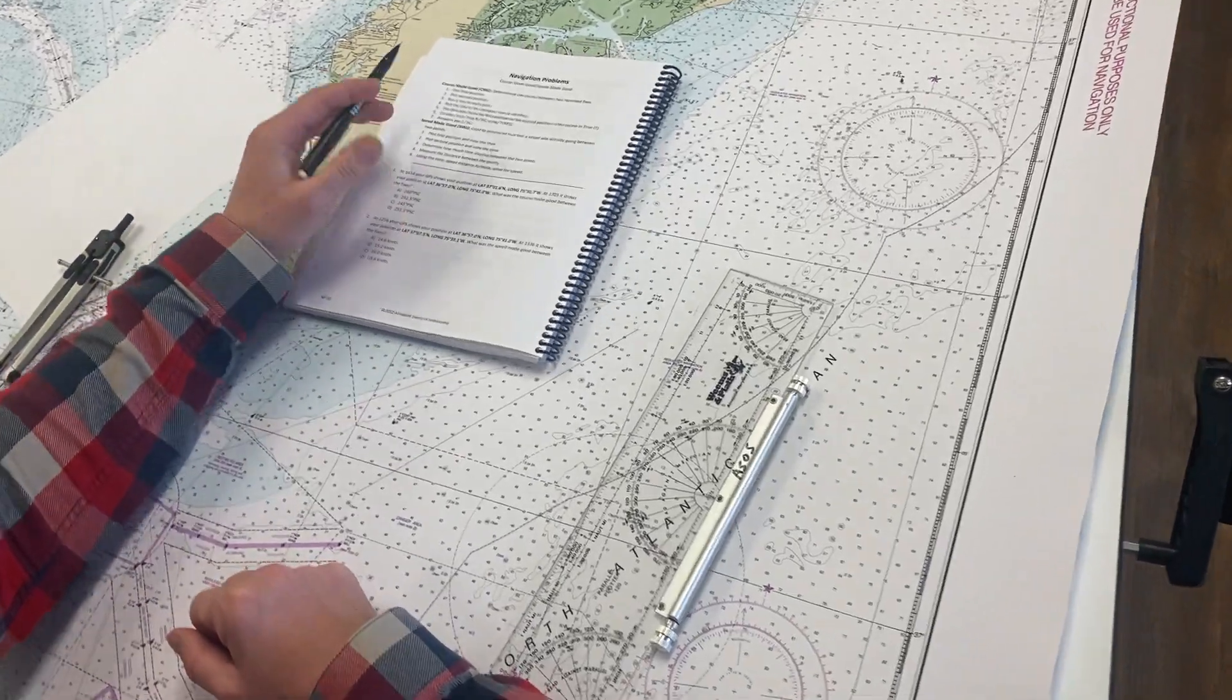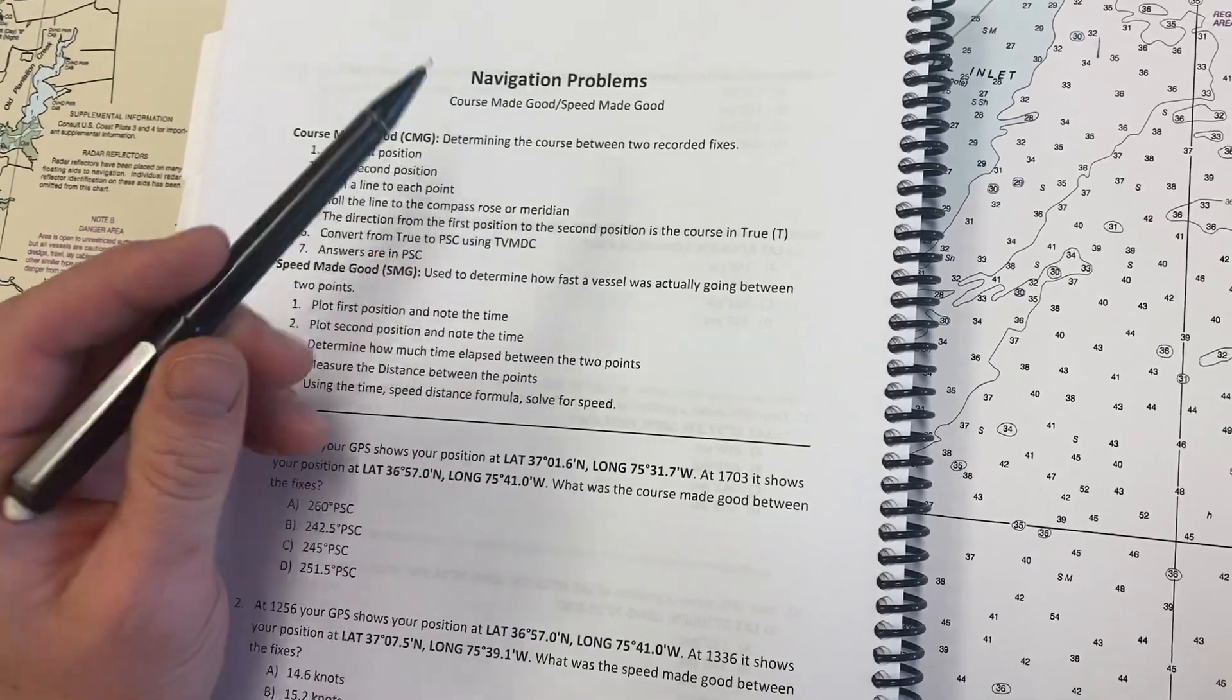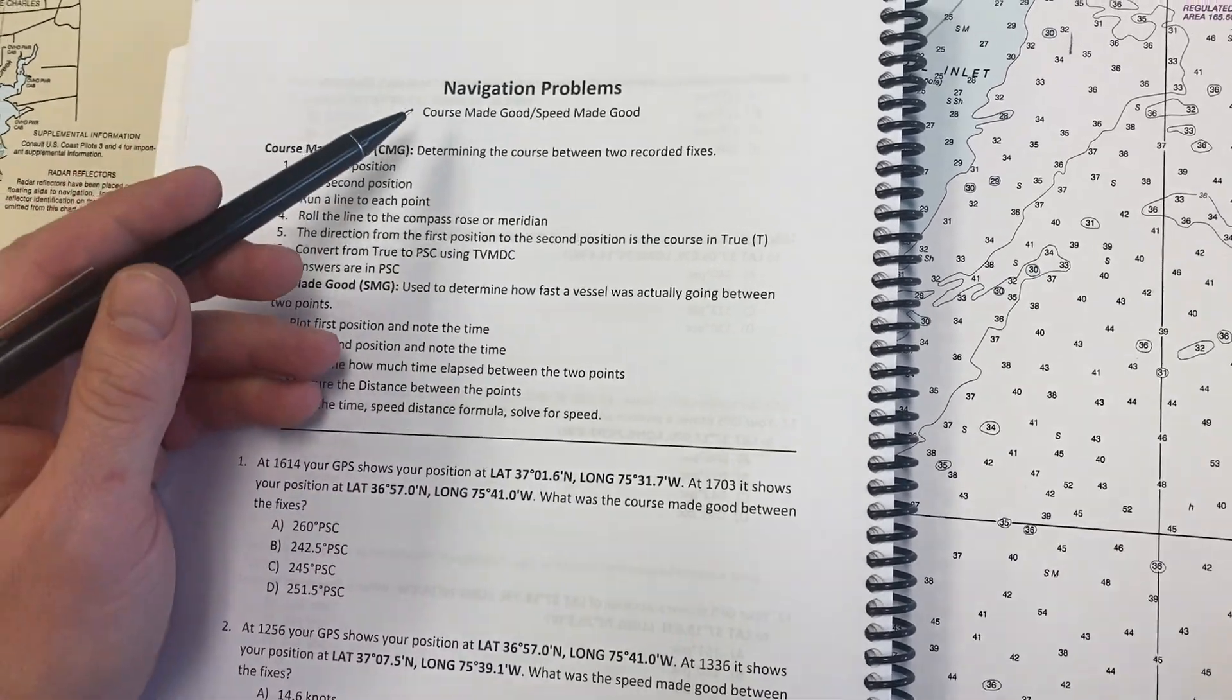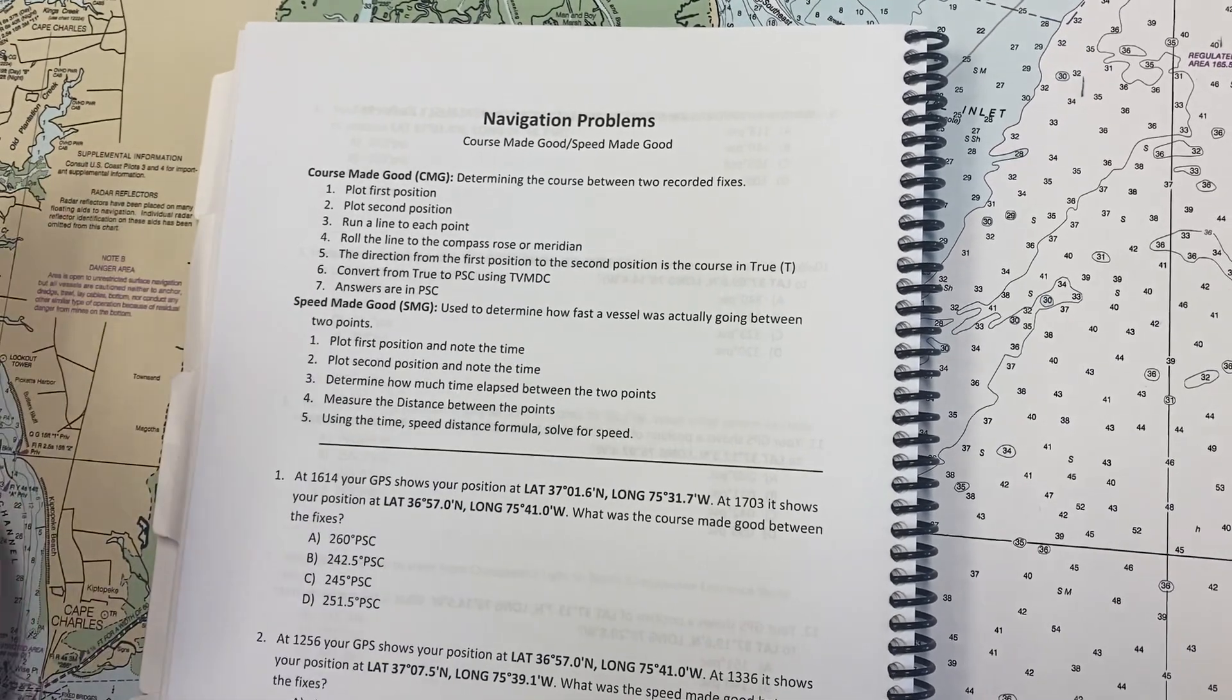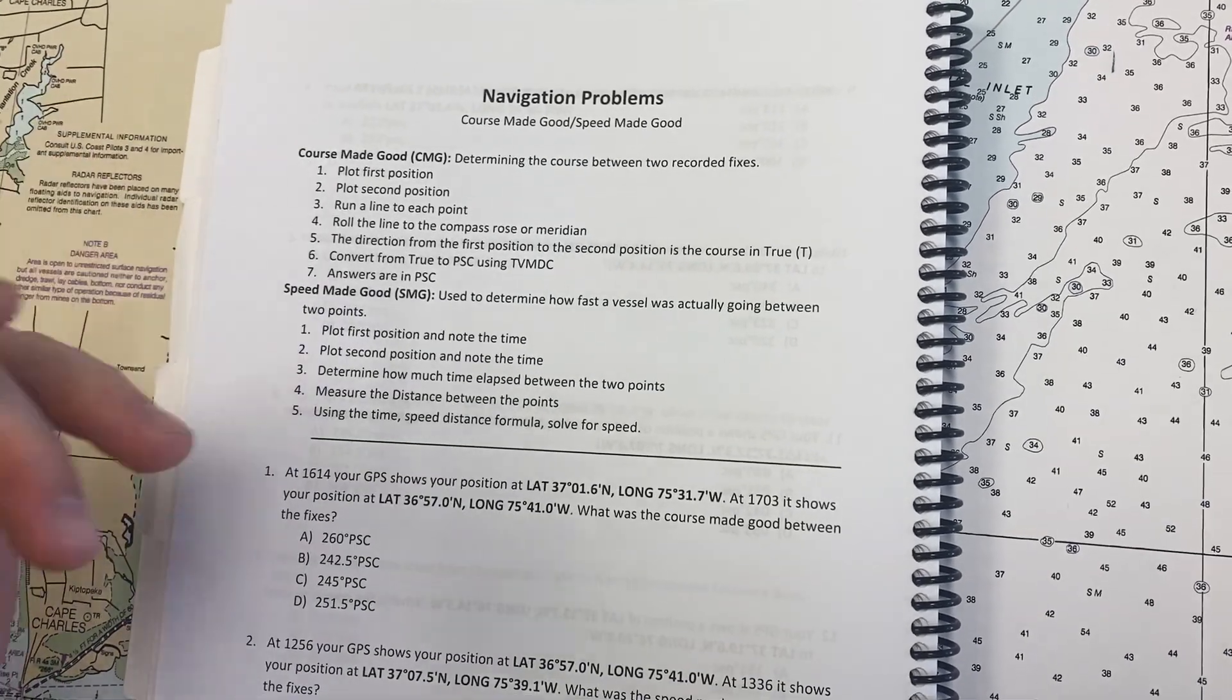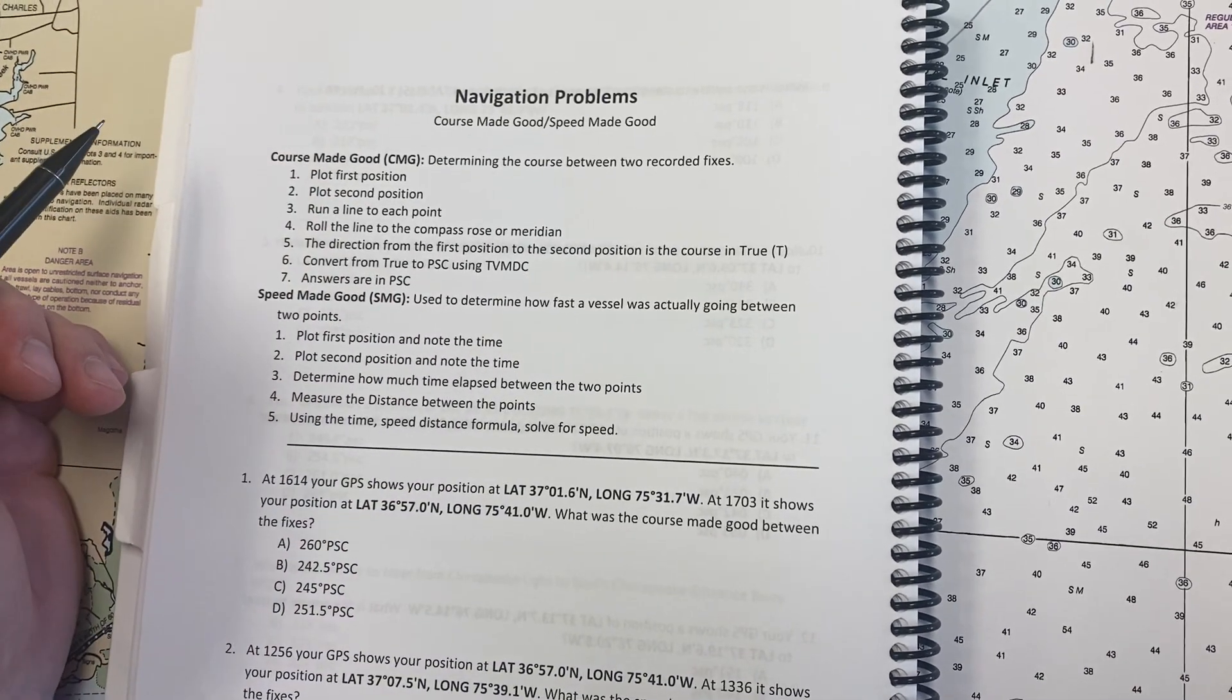All right, here we go. Back again, navigation problems. We're going to do a speed made good. If you want to see how the course made good works, go back to look at the course to steer problem. They're exactly the same. One is what you want to do and one is what you have already done between the two points.